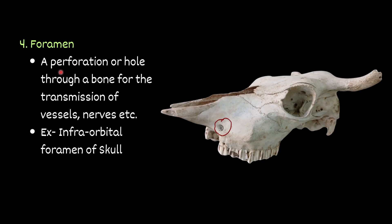Foramen — a perforation or hole through a bone for the transmission or passage of vessels and nerves. For example, the infraorbital foramen of the skull. In the skull you will find many foramina; when we study the skull we will discuss details. This is one foramen — the infraorbital foramen of the skull.